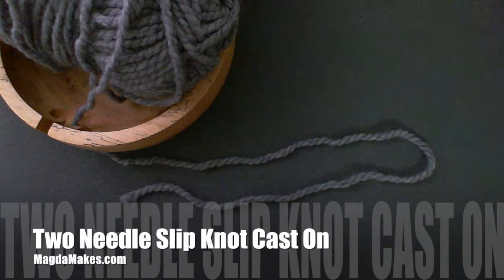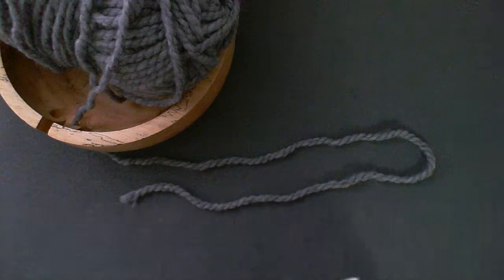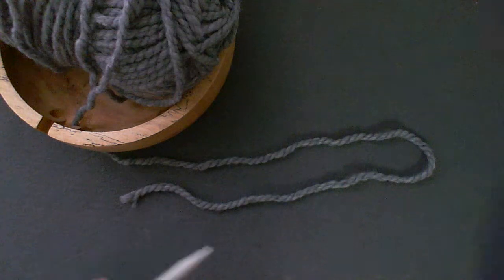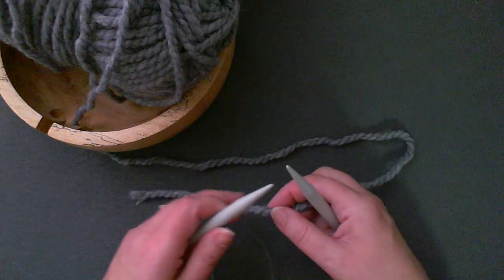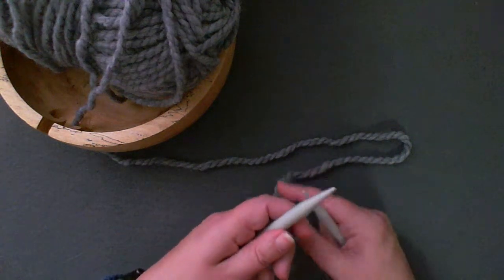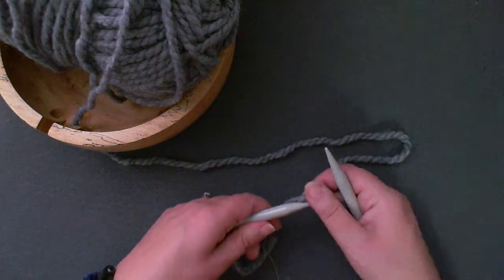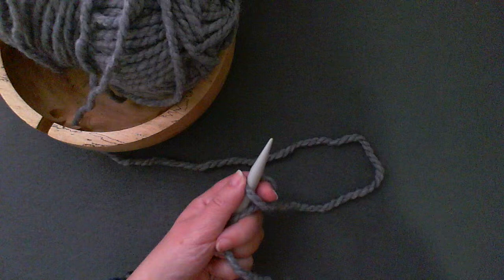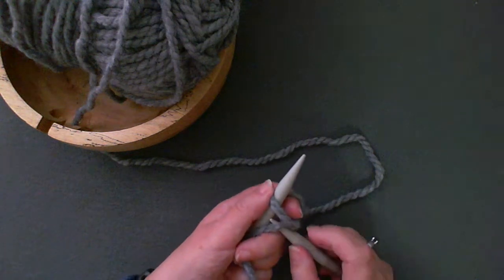My current favorite stretchy cast-on is a variation of Jenny's Slipknot Cast-On, but I find that one difficult to get even. So this is Tilly Buddie's variation on it, and I've just added one little twist.